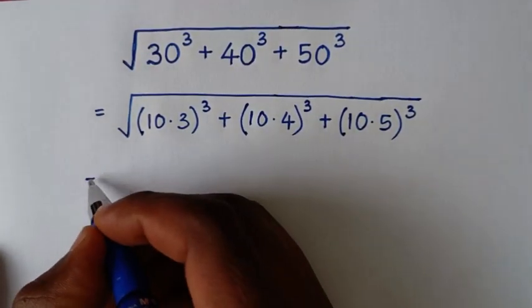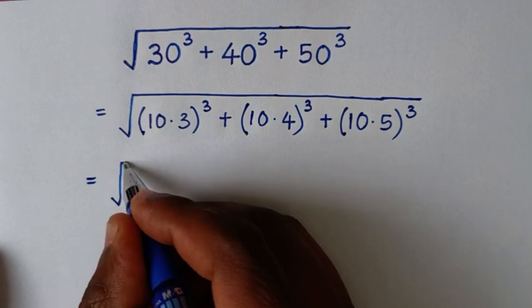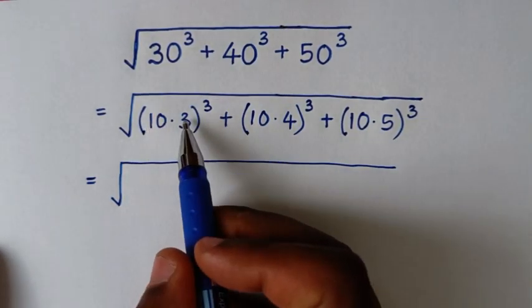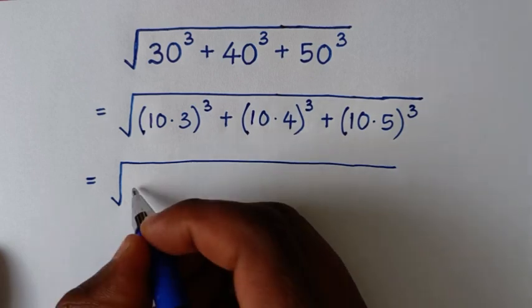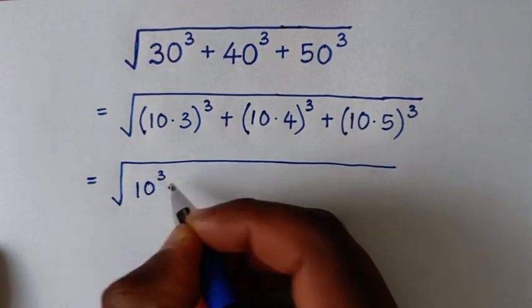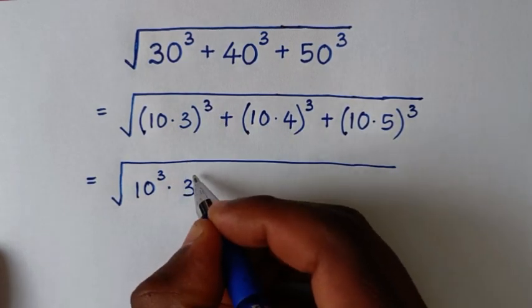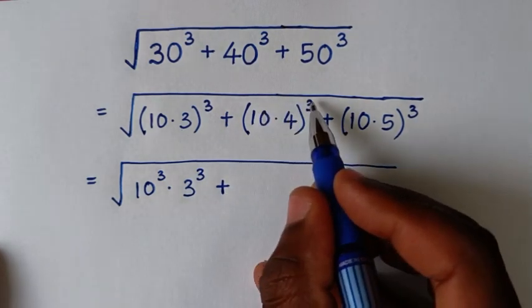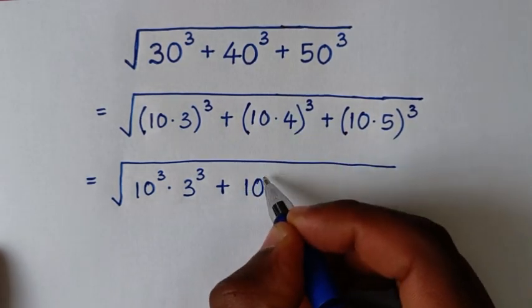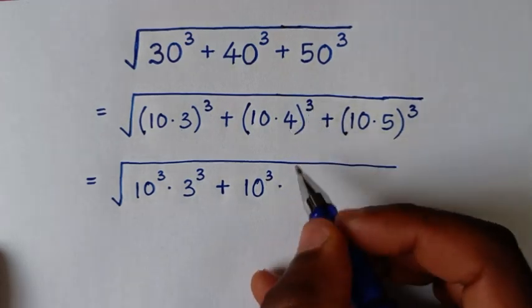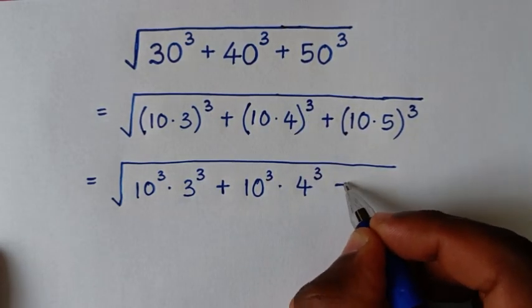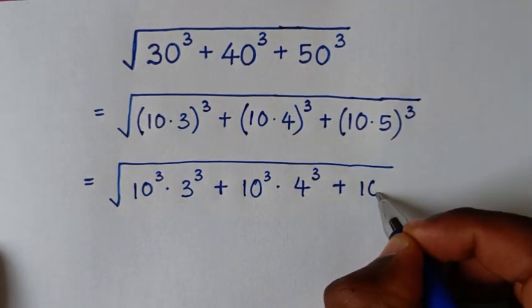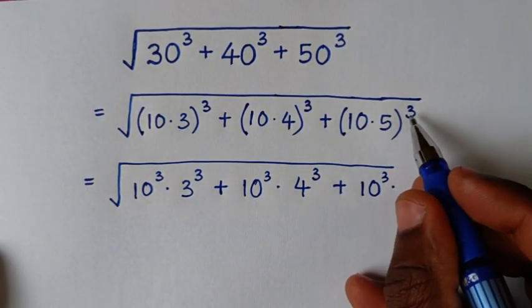Then in the next step, it will be equal to the square root. We take the power of 3 inside each bracket: it will be 10³ times 3³, plus 10³ times 4³, plus 10³ times 5³.